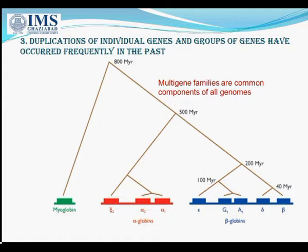The proto-alpha and proto-beta lineages split by a duplication that occurred 500 million years ago, and the duplications within the alpha and beta families took place during the last 200 million years. Note that each set of genes is now on a different chromosome. The myoglobin gene is on chromosome 22, whereas the alpha globin genes are on chromosome 16 and the beta globin genes are on chromosome 11.